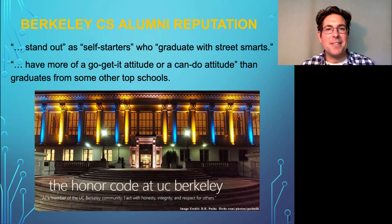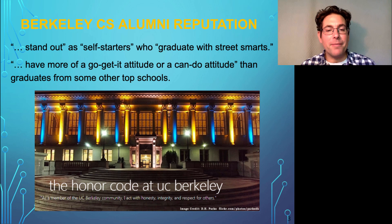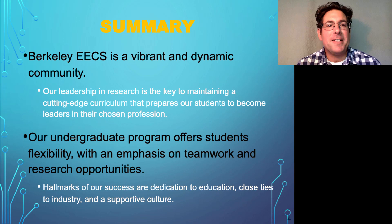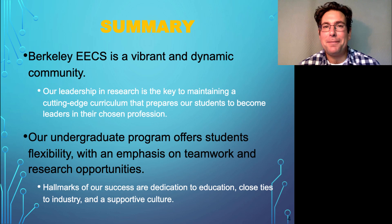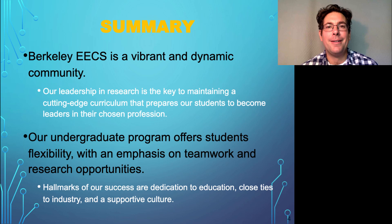Being successful in the world is not just about being technically proficient or really smart—you also have to be able to work with others, and with integrity and honesty. We have an honor code at UC Berkeley where we all declare that as members of the UC Berkeley community, we act with honesty, integrity, and respect for others. Learning that discipline while you're a student sets you up to be productive in the world afterwards. The Berkeley EECS department is vibrant—a dynamic community full of all kinds of people who share a common motivation for understanding and using this technology.